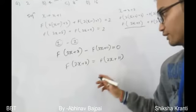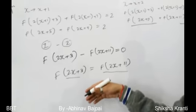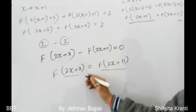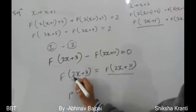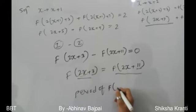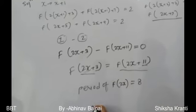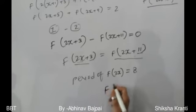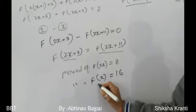So f(2x + 3) = f(2x + 11), meaning the function repeats after shifting by 8 in the argument (11 - 3 = 8). Since the argument is 2x, the period of f(2x) is 8. Therefore the period of f(x) is 16. The correct option is D.